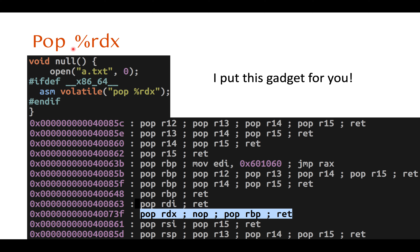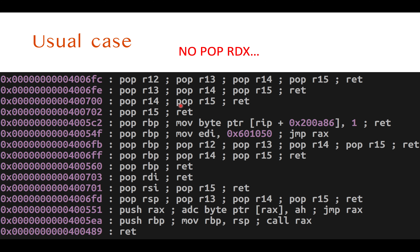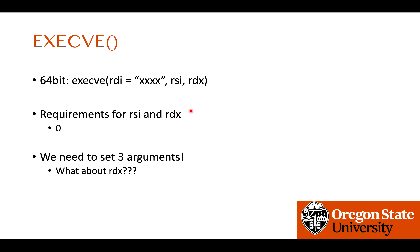In most programs — as shown in the ROP gadget output of the challenge — you can find pop rdx and return because it was intentionally inserted as inline assembly. But in a typical real binary without that line, you cannot find pop rdx anywhere. The usual ROP gadget output shows pop rsi, pop rdi, pop r13/r14/r15, but no pop rdx at all.